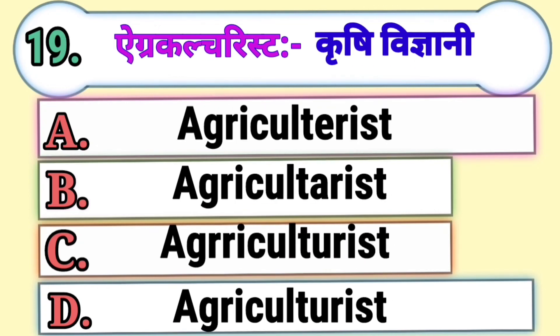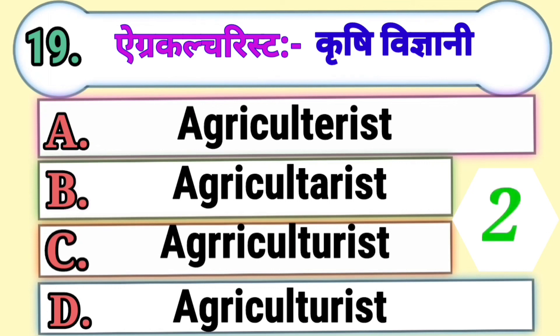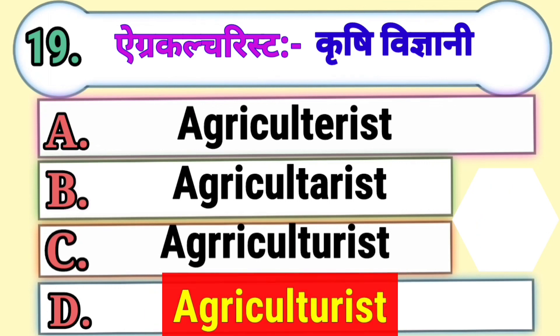Question 19. Agriculturist means Krishi Vigyan. Choose the correct spelling of agriculturist. Option A, Option B, Option C, or Option D. The correct answer is Option D, Agriculturist.